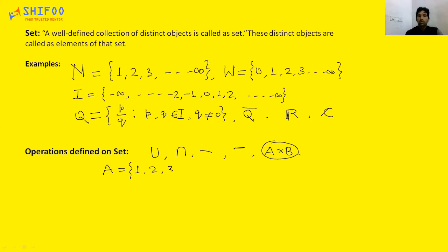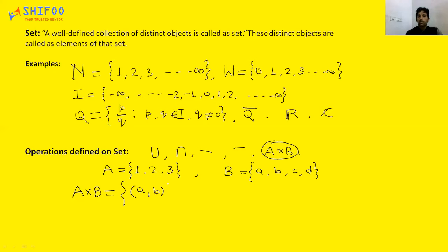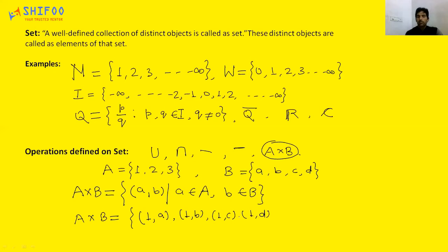Let's say A = {1, 2, 3} and B = {a, b, c, d}. A cross B is defined as the collection of ordered pairs (a, b) such that a belongs to set A and b belongs to set B. So computing A cross B: take 1 from A and pair with each element of B — (1,a), (1,b), (1,c), (1,d) — similarly (2,a), (2,b), and ending with (3,c), (3,b), and so on.